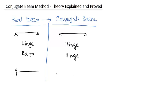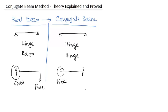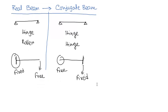Now, what about a fixed beam or cantilever beam? For a cantilever beam, its conjugate beam will have the fixed end become free and the free end become fixed. If there is an intermediate support, it will become an internal hinge in the conjugate beam.